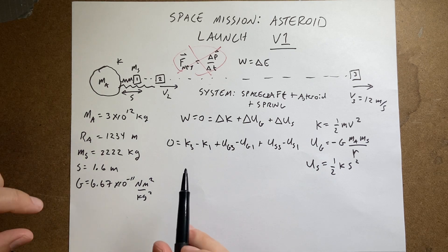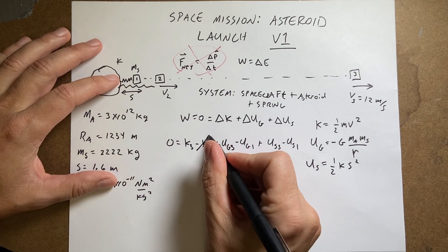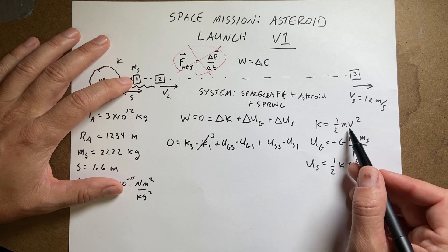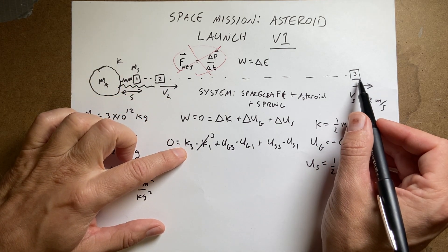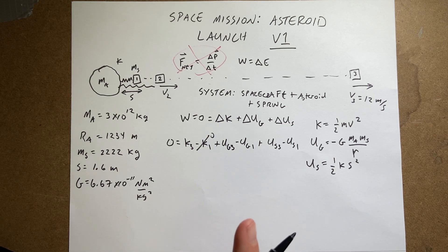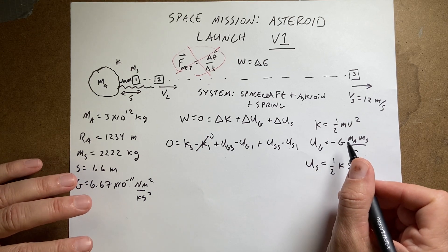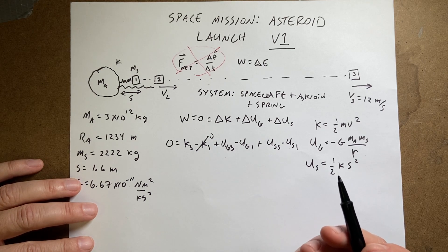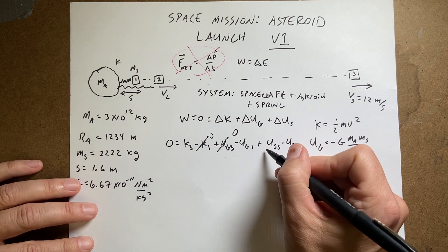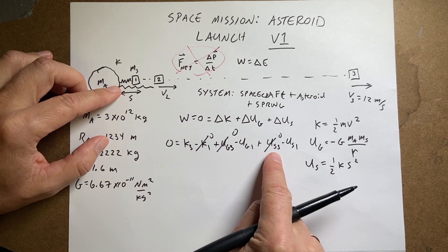Two of these terms are zero. The first is K1 — because if I release this from rest, it's not moving at position 1, so velocity is zero and kinetic energy is zero. It is moving at position 3, so K3 is not zero. UG3: if R gets really, really big, this potential gets really, really small — so if it's really far away, the final gravitational potential is essentially zero. And US3 is zero because at position 3 the spring is not compressed or stretched at all — it's not even interacting with the spring.